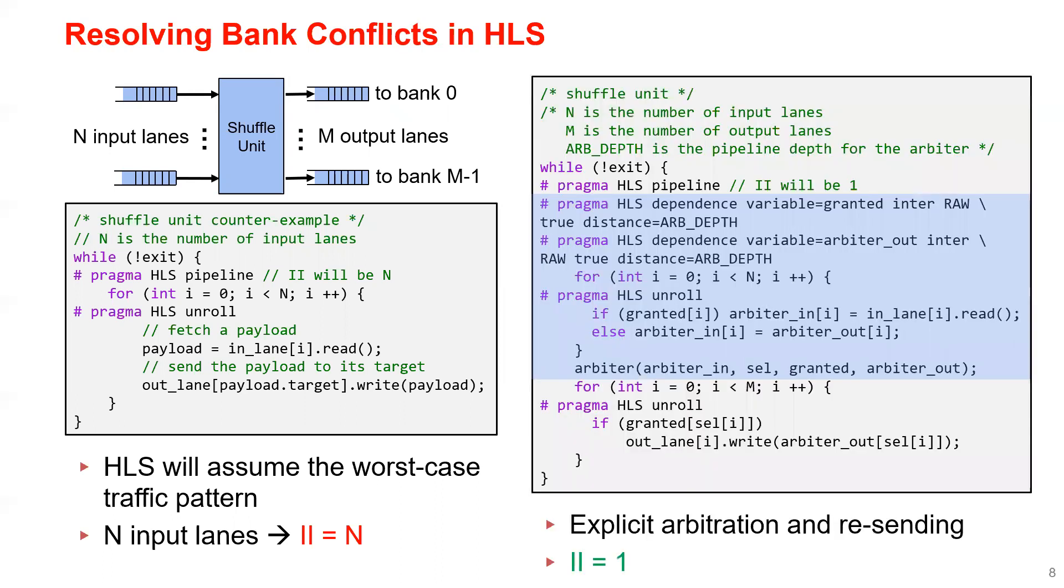In HiSparse, we explicitly implement the arbitration logic and a resending mechanism to send the denied payloads back to the input of the arbiter, so that we don't lose them. The corresponding code is highlighted in blue. In this way, we can fully pipeline the shuffle unit and the bank conflicts are resolved in a dynamic way.